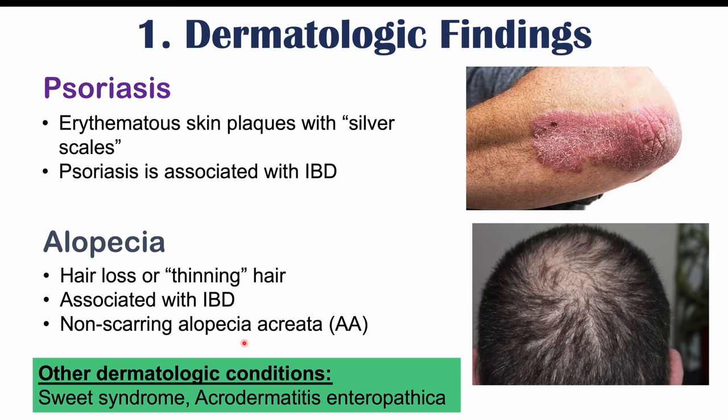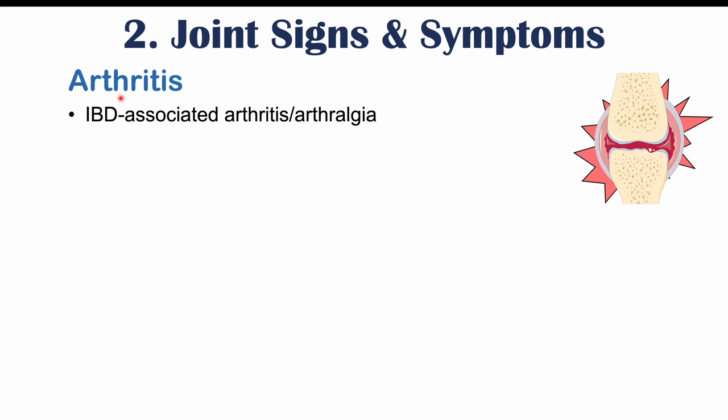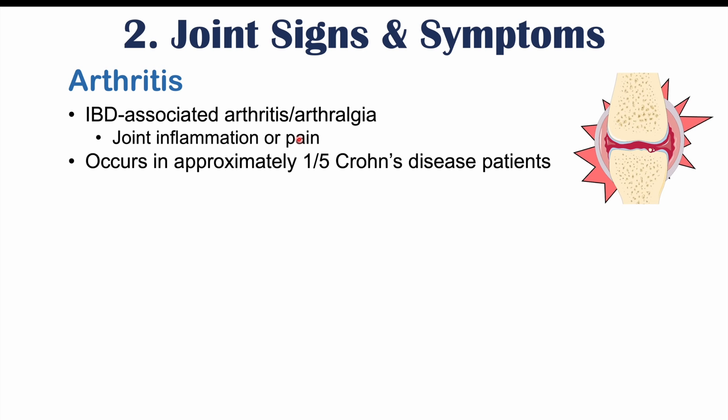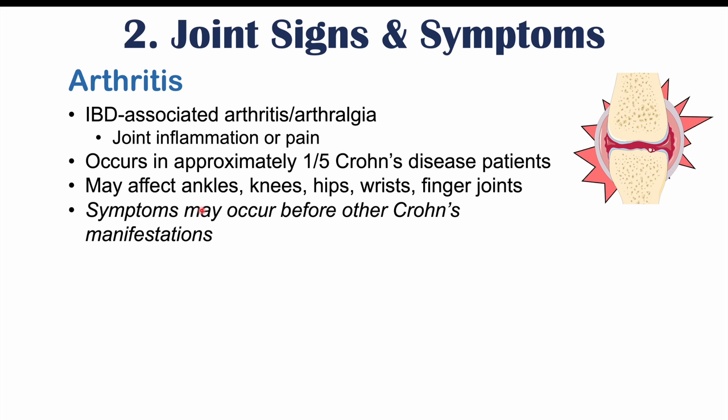The next group of atypical symptoms involves joint signs and symptoms. By far the most common is IBD-associated arthritis or arthralgia — joint inflammation and joint pain — which can occur in approximately one in five Crohn's disease patients. It particularly affects the ankles, knees, hips, wrists, and finger joints. Importantly, symptoms of arthritis can manifest even before the onset of gastrointestinal symptoms in Crohn's disease.